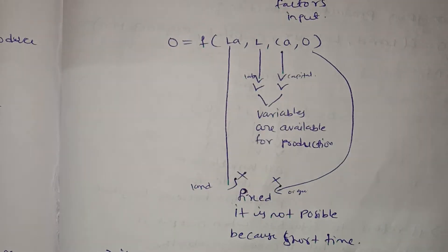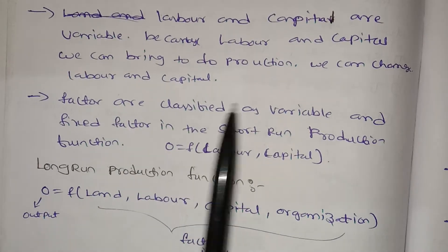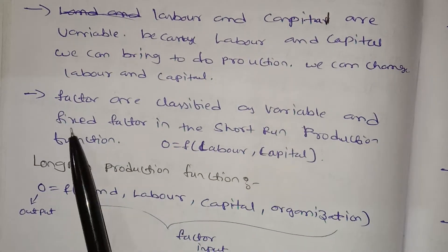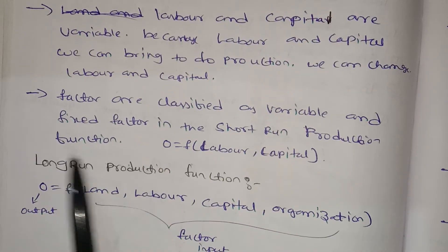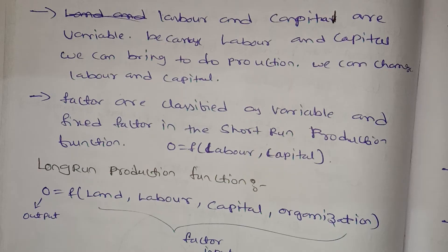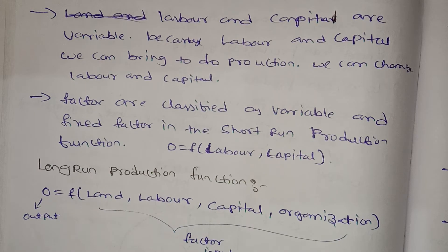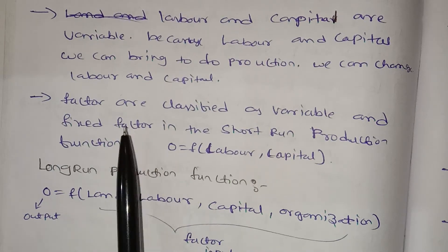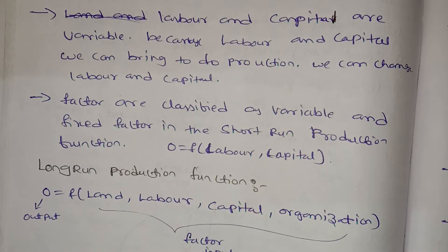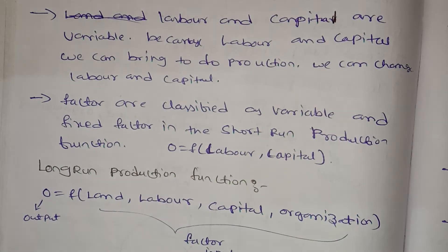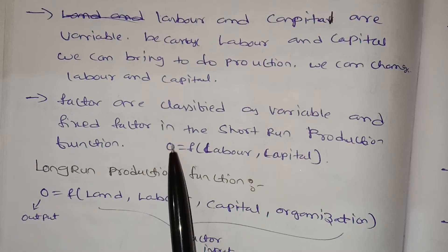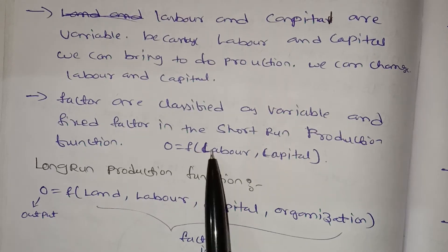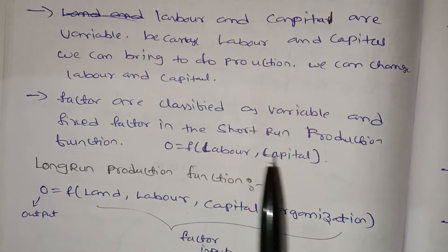Factors are classified as variable and fixed factors in the short-run production function. Variable factors — labor and capital — can be changed. Fixed factors — land and organization — cannot be changed. Output depends on the variable inputs of labor and capital.